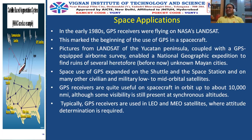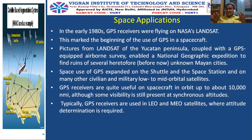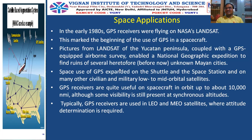Pictures from Landsat of the Yucatan Peninsula, coupled with GPS-equipped airborne survey, enabled the National Geographic Expedition to find ruins of several previously unknown Mayan cities. GPS receivers are quite useful on spacecraft in orbit up to about 10,000 nautical miles, with visibility still present at synchronous altitudes. Different satellite types like LEO and MEO satellites also use GPS receivers where attitude determination is required.